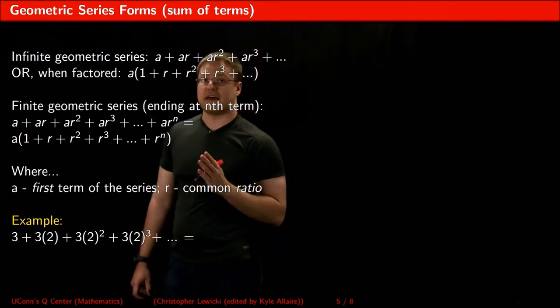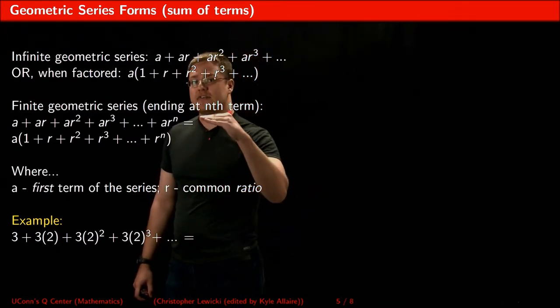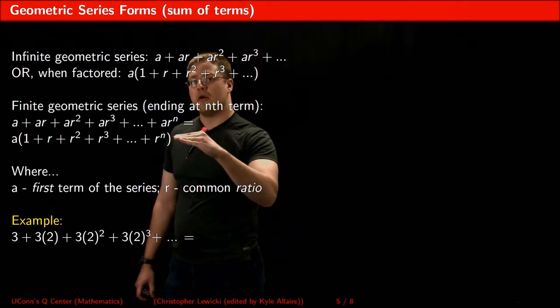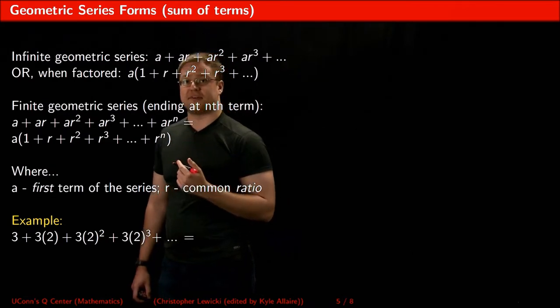Similarly, a finite geometric series, meaning that it stops after a certain term, is written either like this or like this, again with A the first term being factored out.